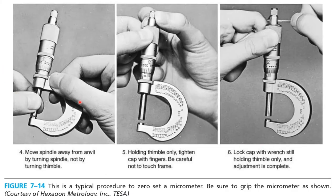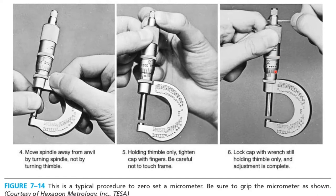To zero-set the micrometer: grip the micrometer properly and move the spindle away from the anvil by turning the spindle, not the thimble. Holding the thimble, tighten the cap with your fingers, being careful not to touch the frame. Lock the cap with the wrench while still holding the thimble, and the adjustment is completed.